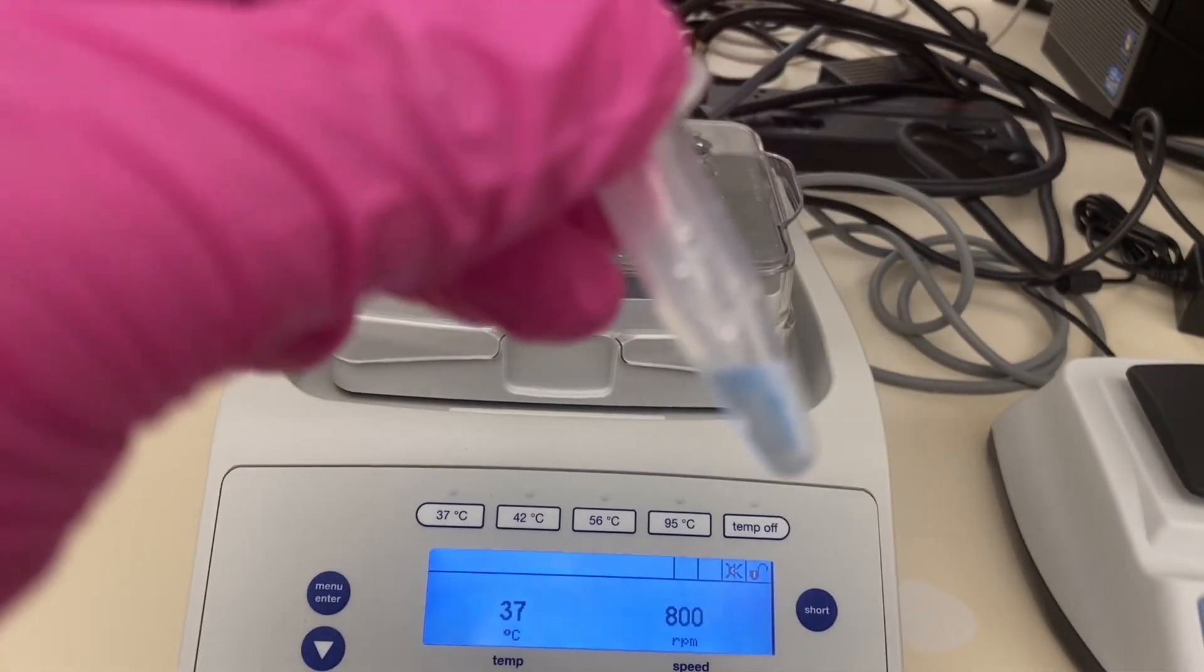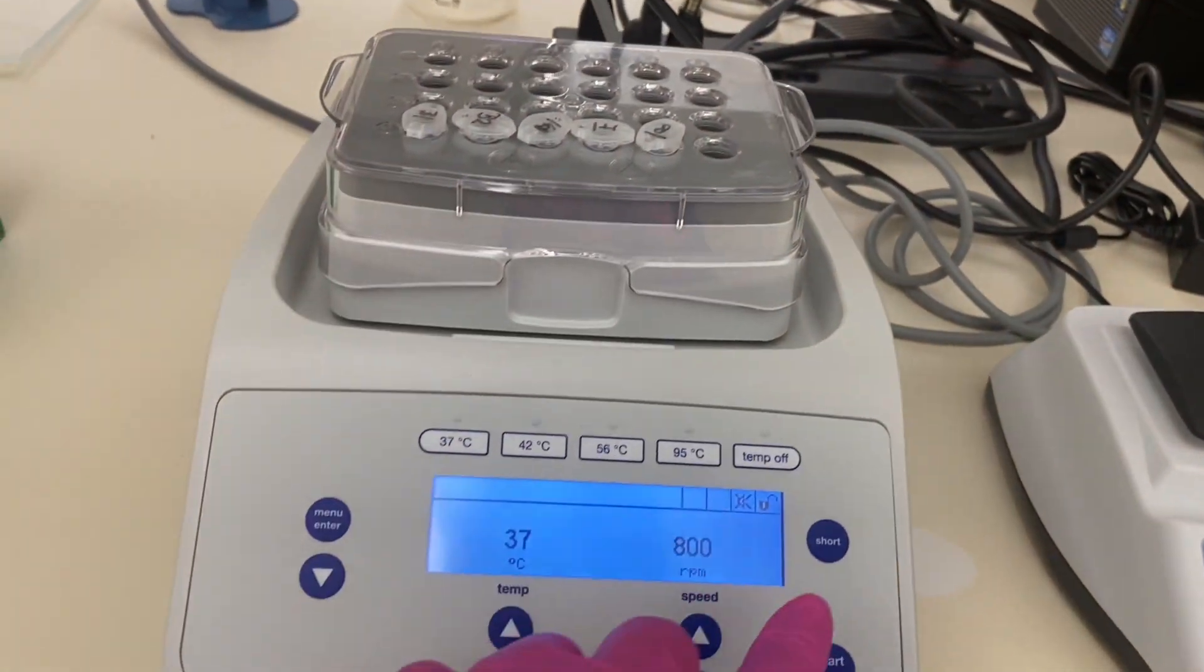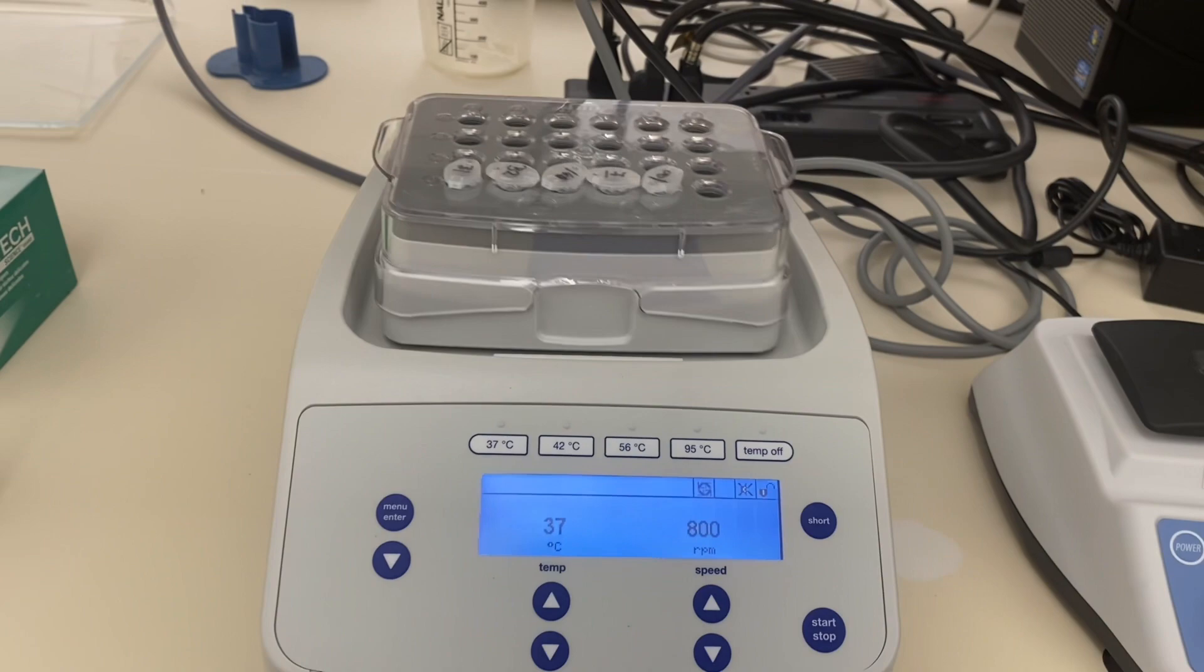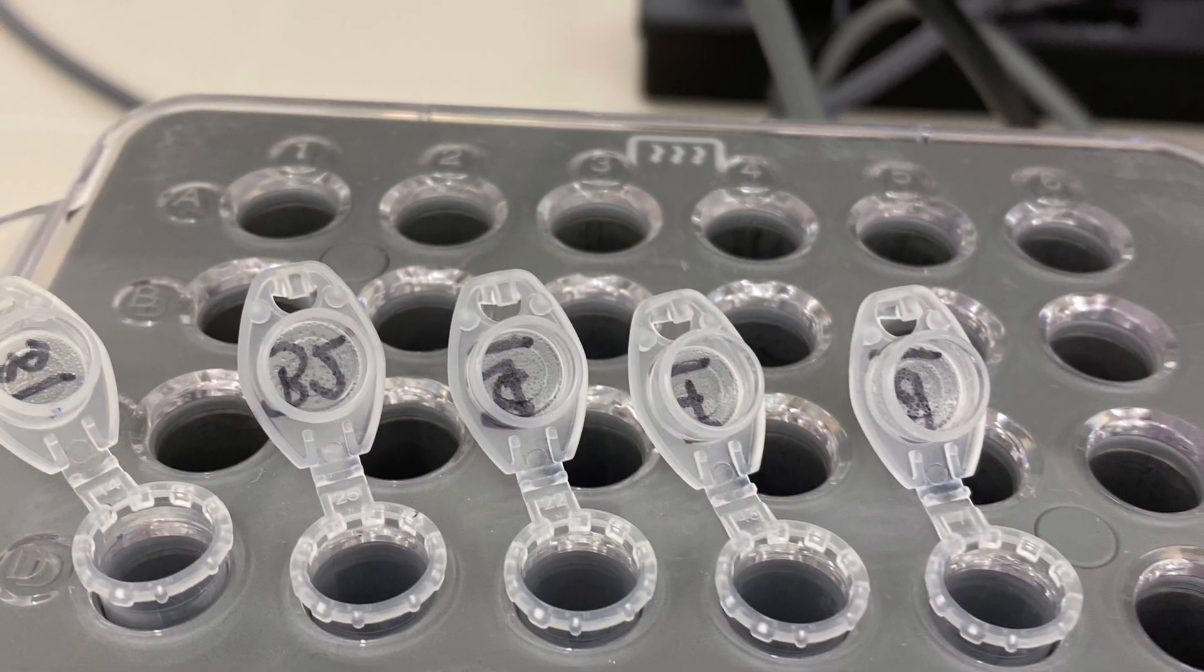Our next step is reduction and I'm going to be using 20 mM TCP in ambic. Ambic is short from ammonium bicarbonate. The process takes 30 minutes on 56 degrees celsius.